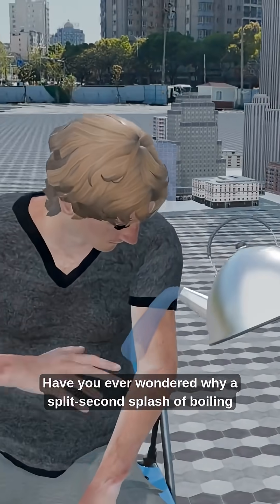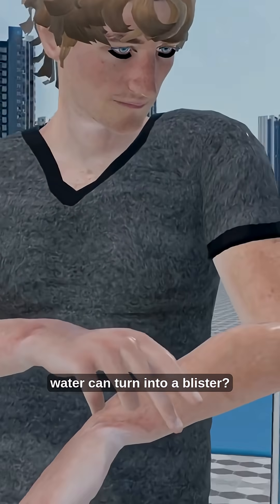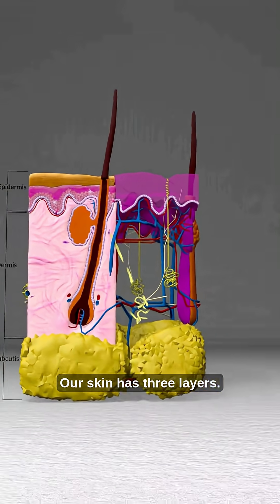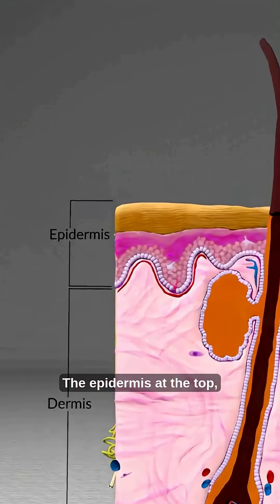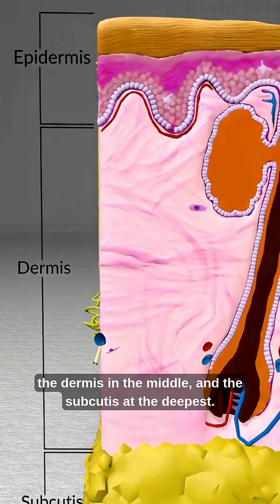Have you ever wondered why a split-second splash of boiling water can turn into a blister? Let's go deep into our skin layers to find out. Our skin has three layers: the epidermis at the top, the dermis in the middle, and the subcutis at the deepest.